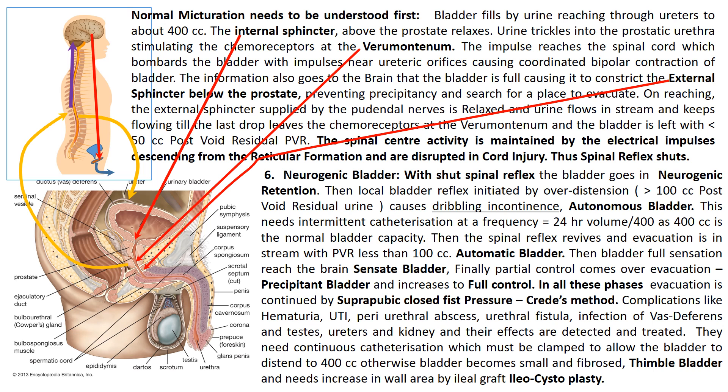In all these phases beyond the automatic bladder, evacuation is continued by suprapubic closed-fist pressure, called Credé's method. Complications include hematuria, urinary tract infection, periurethral abscess, urethral fistula, funiculitis, epididymo-orchitis, seminal vesiculitis, and infection along the ureters and kidney. If continuous catheterization is needed, it must be clamped to allow the bladder to distend to 400 cc; otherwise the bladder becomes small and fibrosed, called a thimble bladder. To increase bladder volume, an ileal graft may be needed — the operation is called ileocystoplasty.